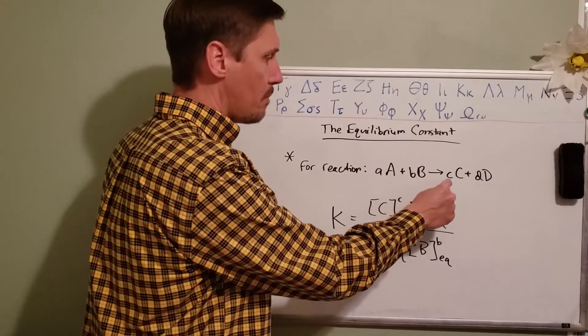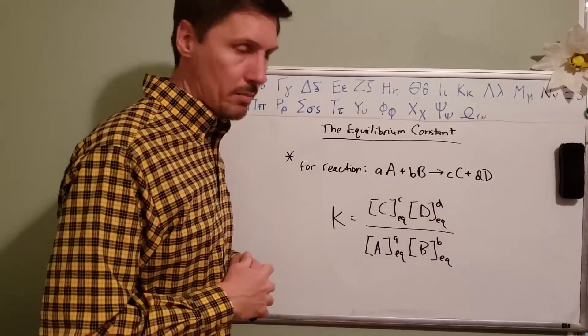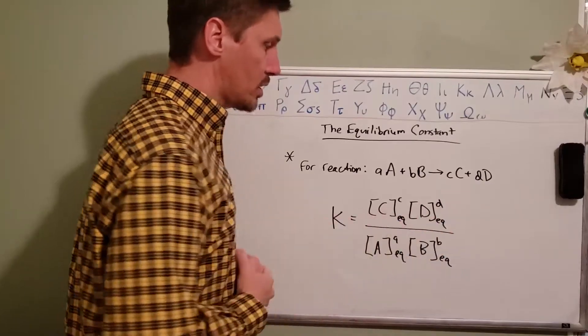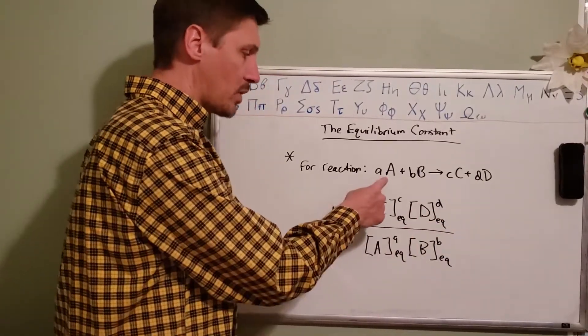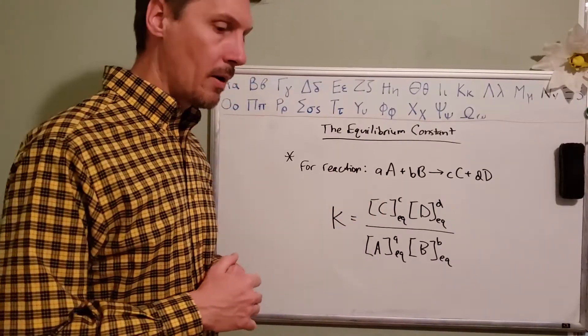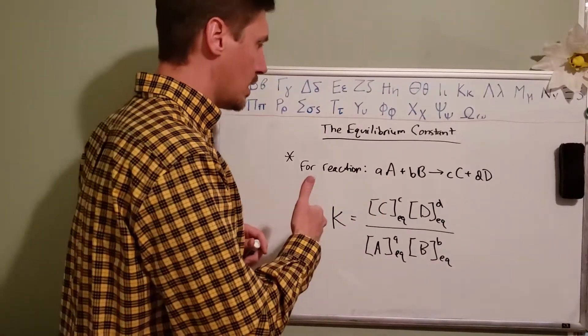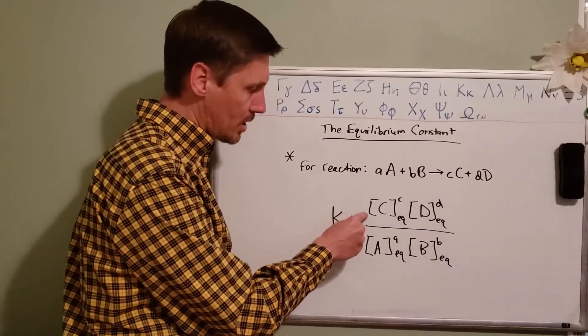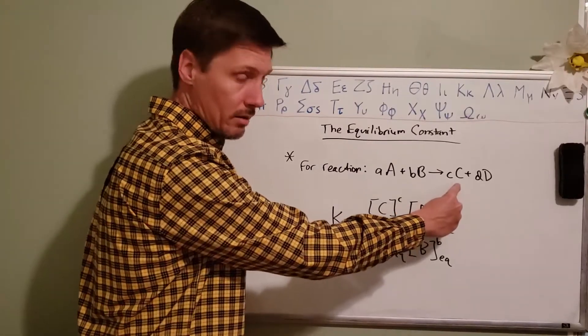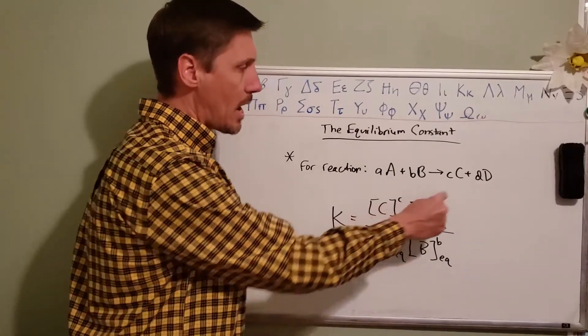Those concentrations are multiplied together and then divided by the concentrations of the reactants multiplied together. This will give us the equilibrium constant. Just to make sure you understand what each of these things mean, this is the concentration of substance C in this equation.